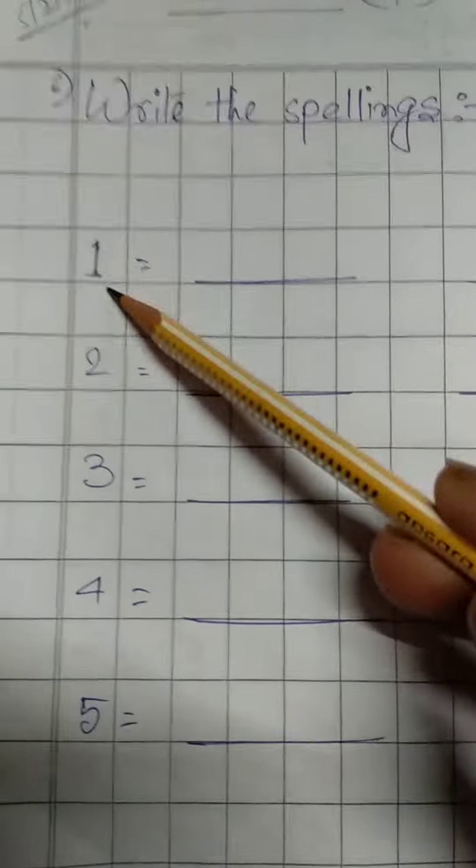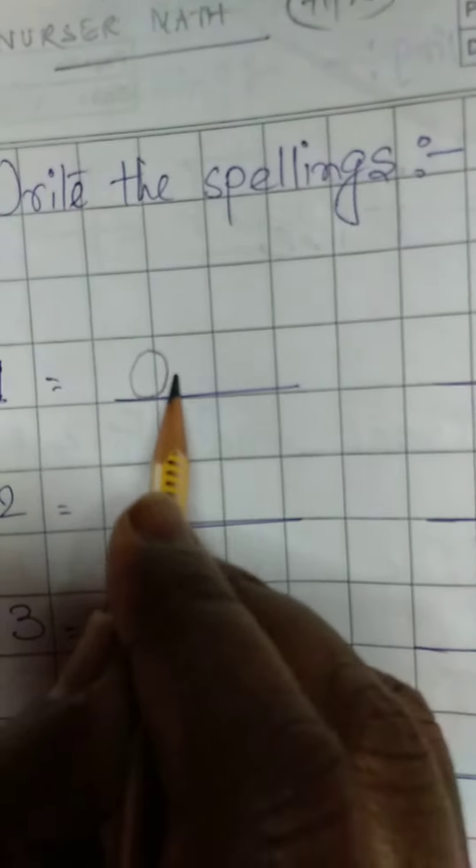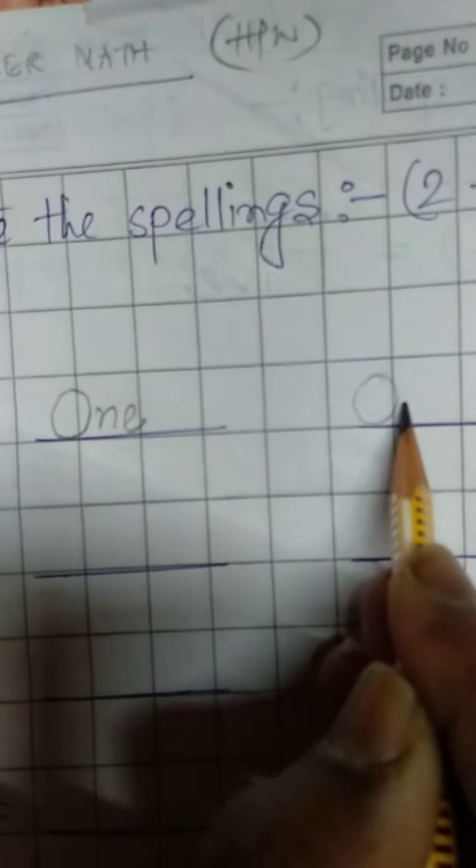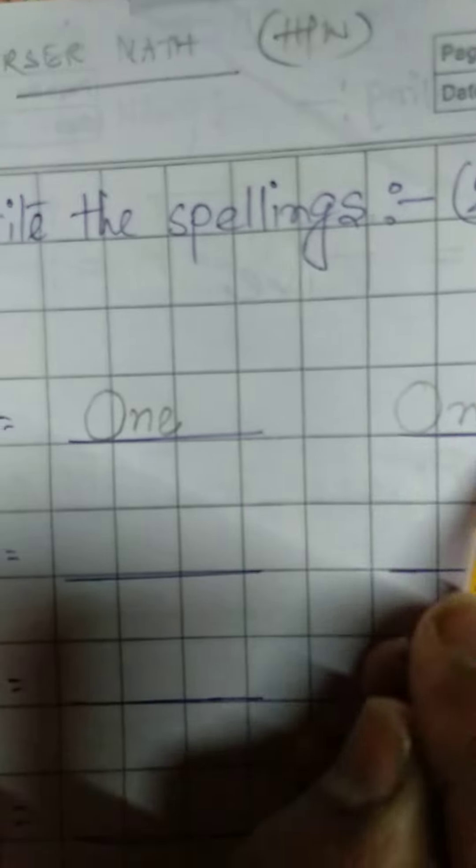This is number 1. You have to write the spelling of number 1 two times. You have already learned the spelling of number 1. What is the spelling of number 1? O-N-E. So you have to write it two times: O-N-E, O-N-E.